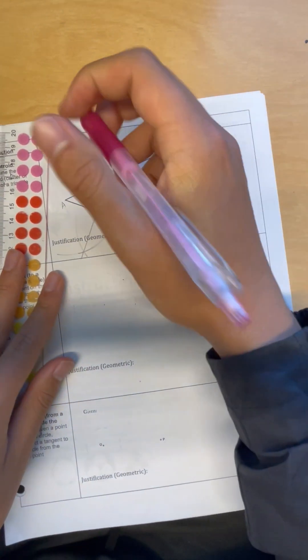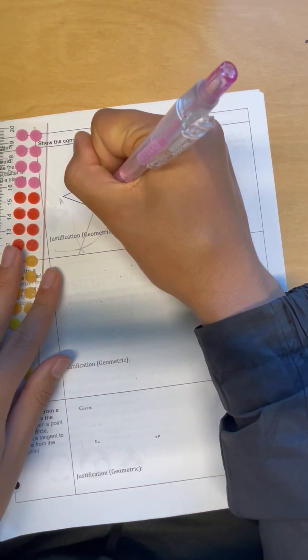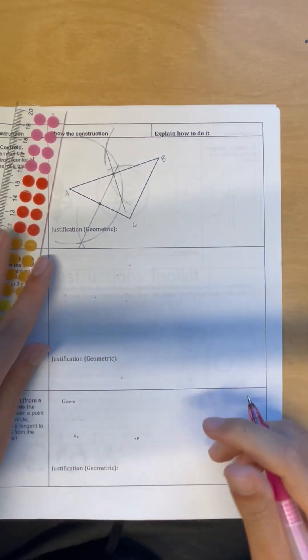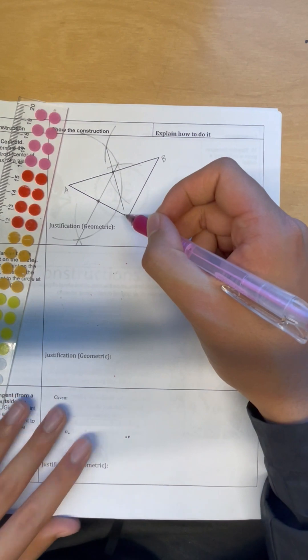There's our perpendicular bisector for AC, and our midpoint for that segment is going to be right, and our midpoint for segment AC is going to be right there.